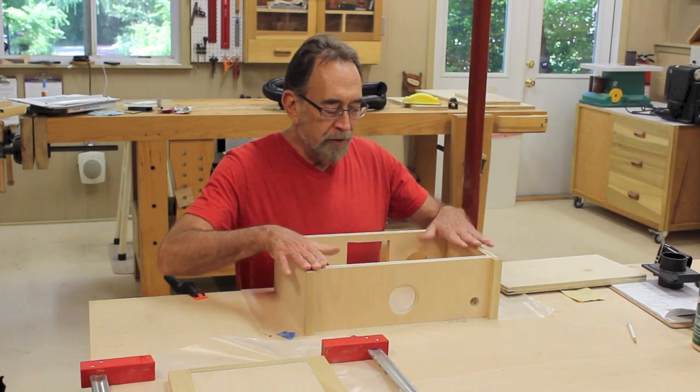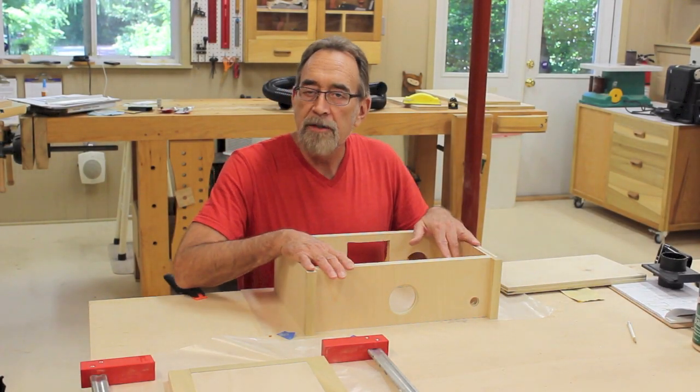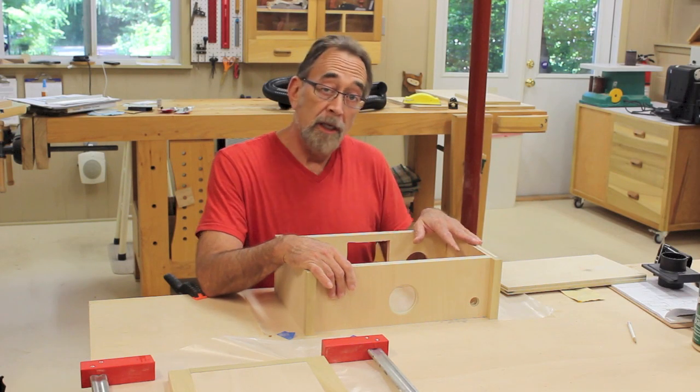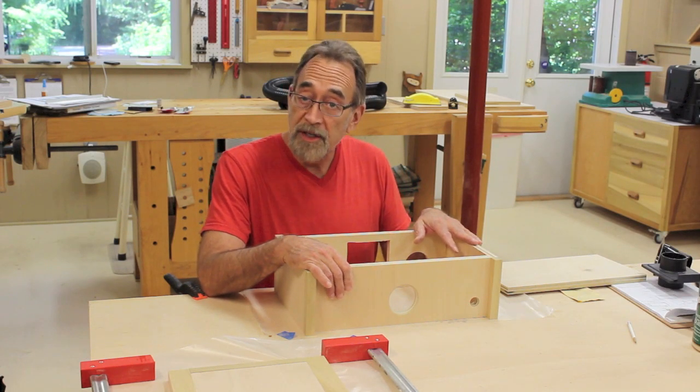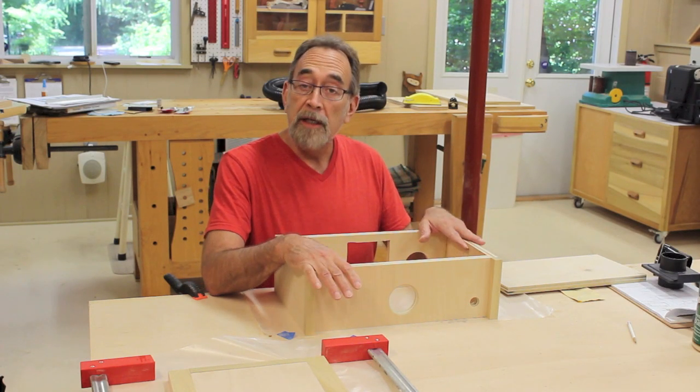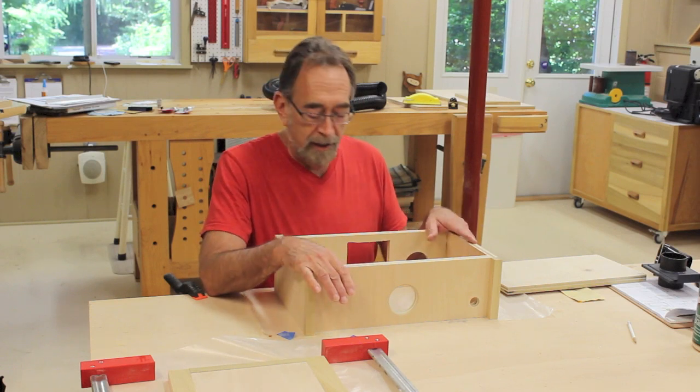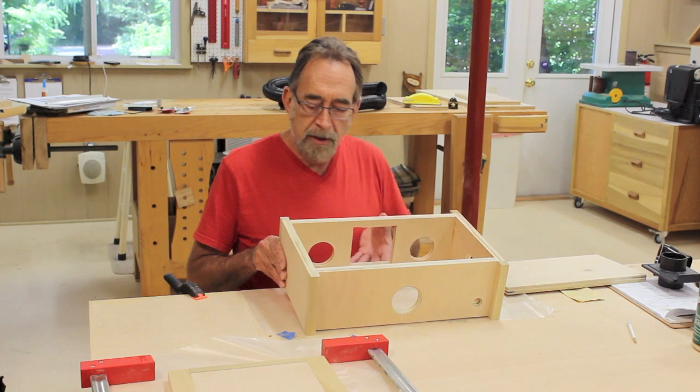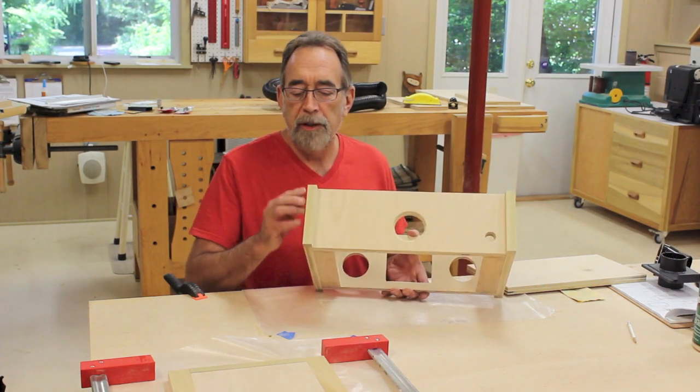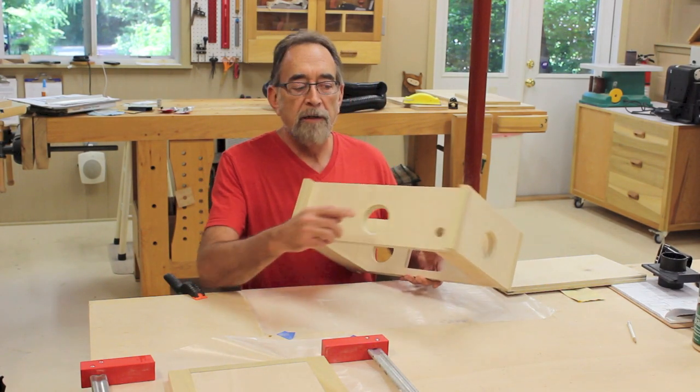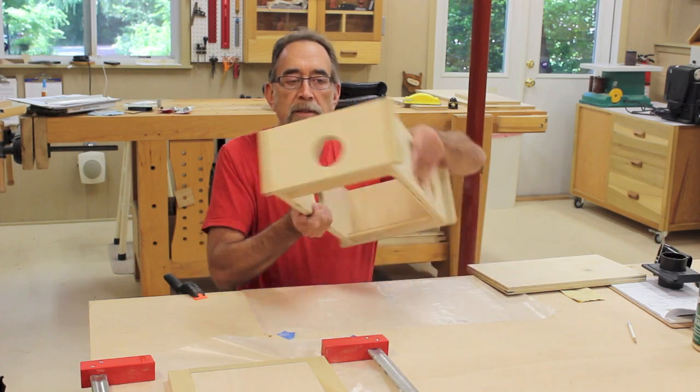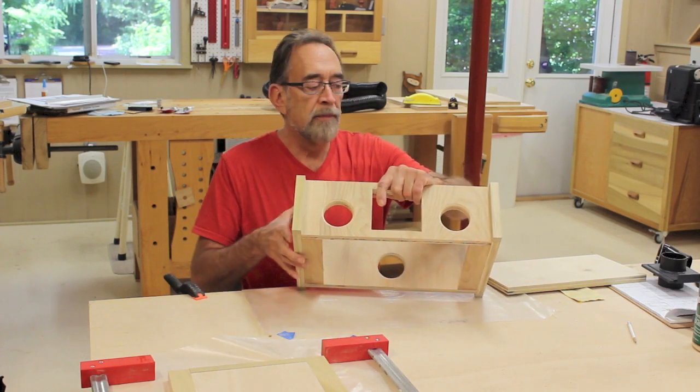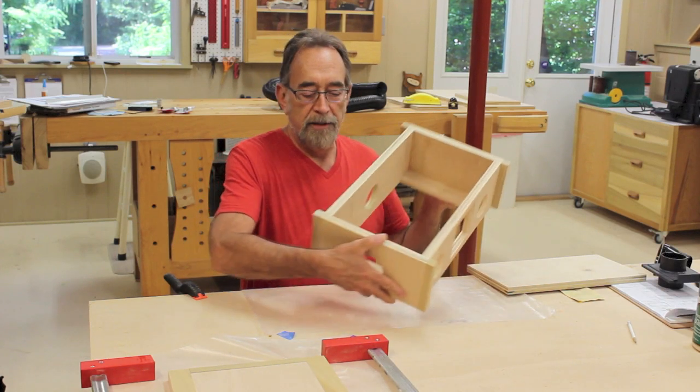Yesterday we built the basic box for the dust collection manifold for the mobile sanding center, put it in the clamps, and let it dry overnight. Today I've come out, taken it out of the clamps, and the first thing I did was cut trim to cover the ends of the plywood on all four sides.